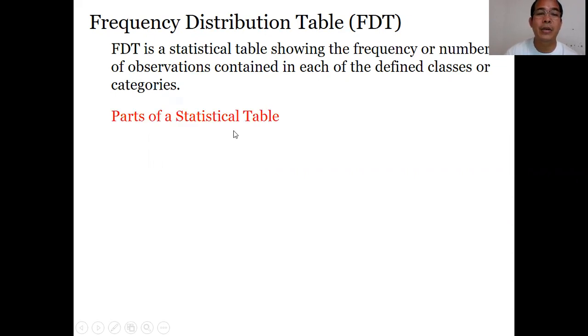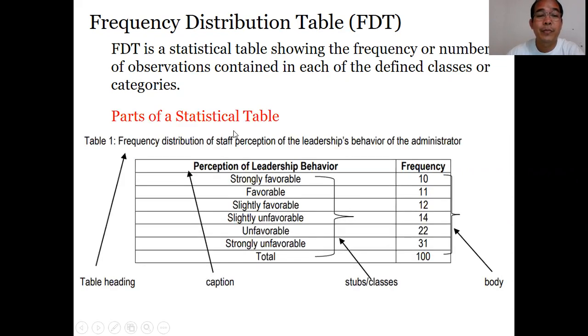Let's have an example of a statistical table. This one is the table heading showing perception of individual behavior. This part is the classes and this part is the frequency. Each frequency added together gives us a total of 100, the total number of frequency.